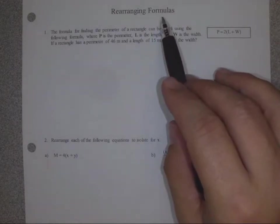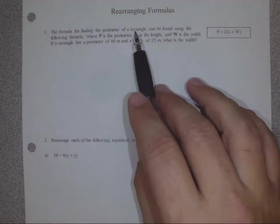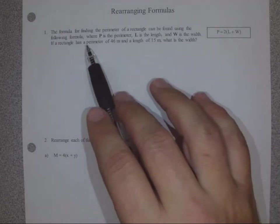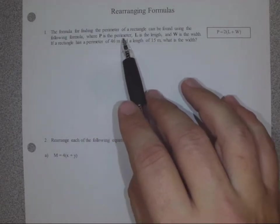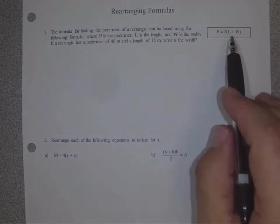We're going to start today with rearranging formulas. The formula for finding the perimeter of a rectangle can be found using the following formula, where P is the perimeter, L is the length, and W is the width. There's the formula there.